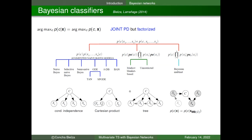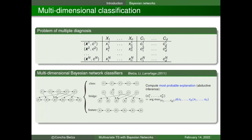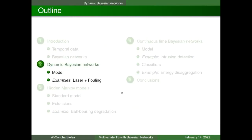Bayesian networks can be used for supervised classification. In this case we have a class variable, and the joint distribution is factorized according to different structures allowing more or fewer dependencies between predictor variables. The problem can be extended to more than one class variable, assuming the classes are related. We introduce a specific architecture allowing classes to be related, with arcs from classes to features, and features also related among themselves. We will return to this kind of model later.